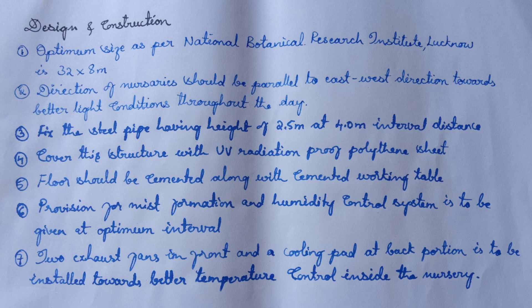The design and construction steps for a modern nursery are as follows. Optimum size: as per the National Botanical Research Institute, Lucknow, it is 38 × 8 meters. Direction should be parallel to east-west for better light conditions throughout the day. Fix steel pipes of 2.5 meter height at 4.0 meter intervals. Cover the structure with a UV radiation-proof polythene sheet. The floor should be cemented with a cemented working table. Provision for mist formation and humidity control at optimum intervals. Two exhaust fans in front and a cooling pad at the back for better temperature control inside the nursery.